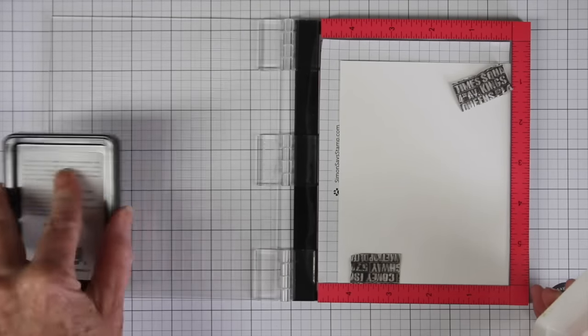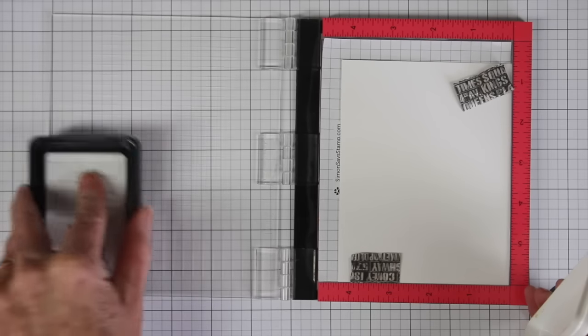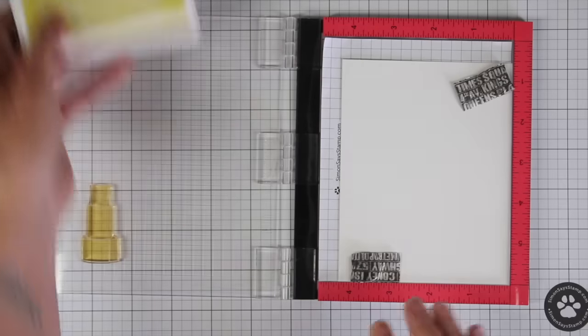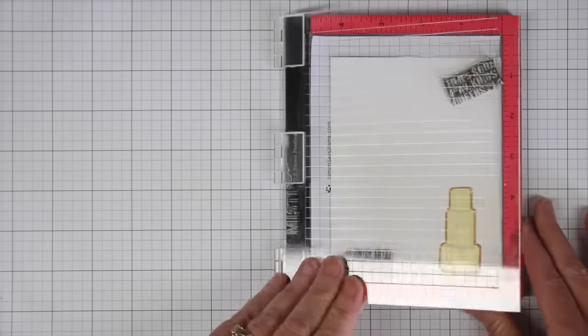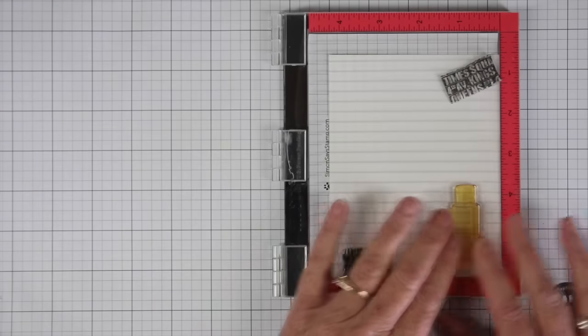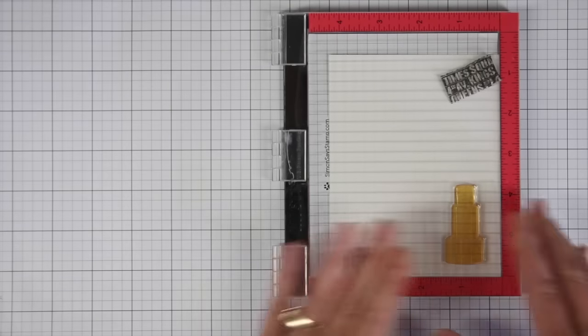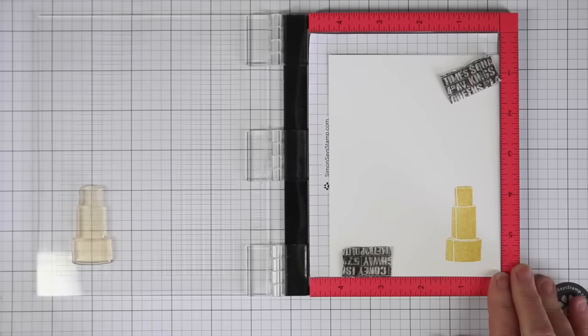So I'm going to make sure that nothing shifted around and I'm going to go ahead and stamp this cake with a light yellow ink. And I'm just going to go ahead and ink that up a few times and it's really best if you work on a nice flat surface. So you can get a really good inking. So I'm going to go ahead and close the door and then just with my fingers, I'm going to push down right in that area of that stamp. And now I can lift the door and I have my image.